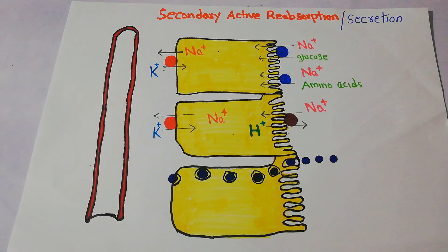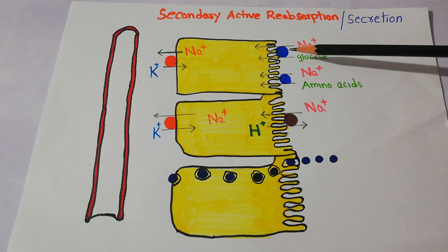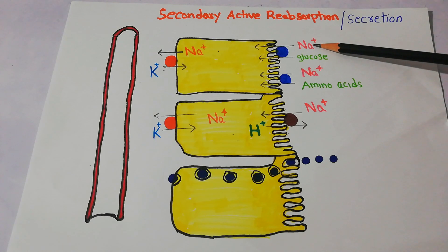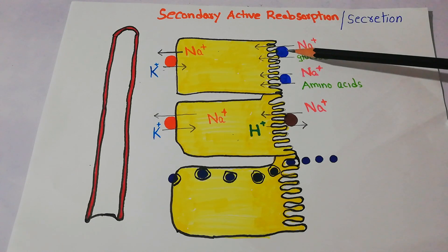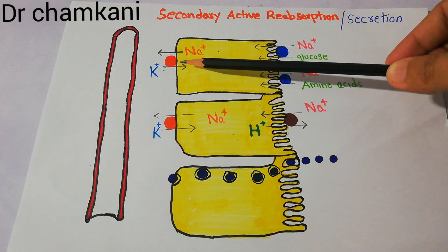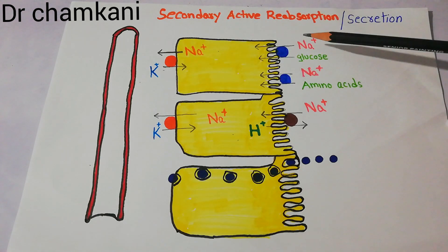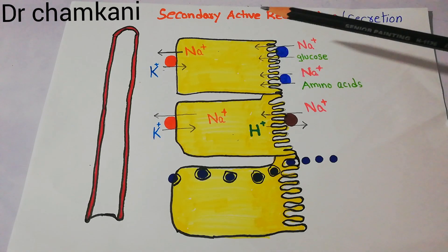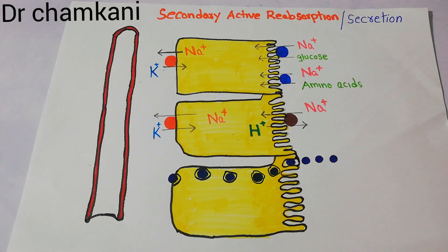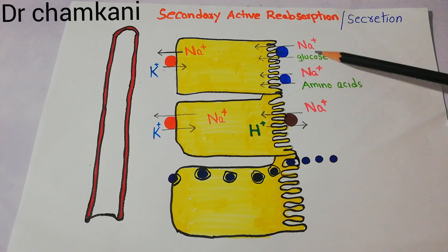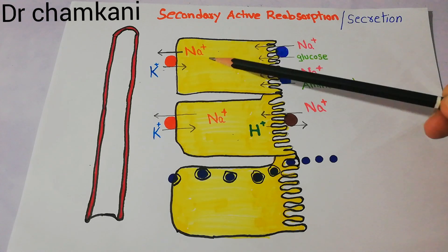In the last lecture we talked about the love story of sodium and glucose, which we named secondary active absorption. In that story, sodium used her energy — due to the sodium-potassium pump — to help glucose and amino acids gain entry into the luminal cells and then into the blood. This process was called secondary active reabsorption or co-transport, because they shared the same carrier protein on the luminal surface of the tubule cells.